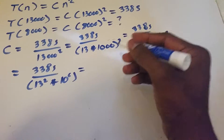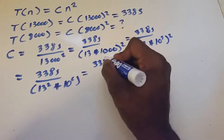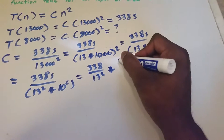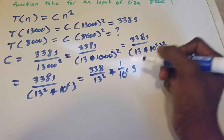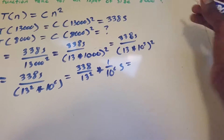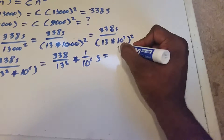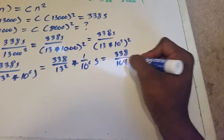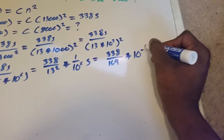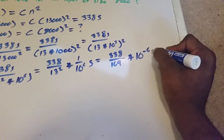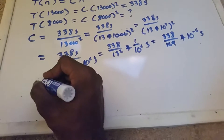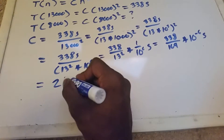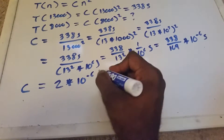Now we can split it off. This will be 338 divided by 13 squared, times 1 over 10 to the power of 6 seconds. We're going to rewrite this one more time: 338 divided by 13 squared equals 2, so this is 2 times 10 to the negative 6 — because that's 1 over 10 to the power of 6 — seconds. So c is equal to 2 times 10 to the negative 6 seconds.